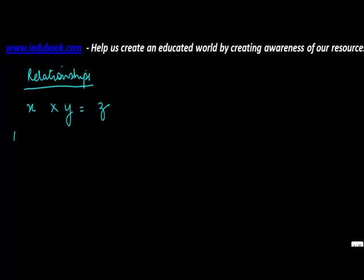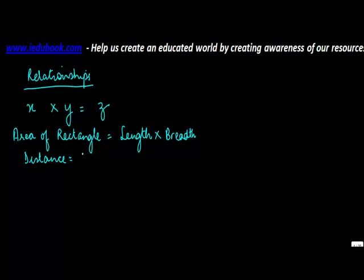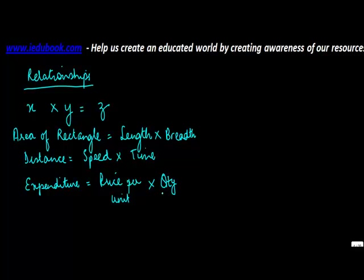So let's say area of rectangle is equal to length into breadth. Distance is equal to speed into time. Expenditure is equal to price per unit into quantity consumed.